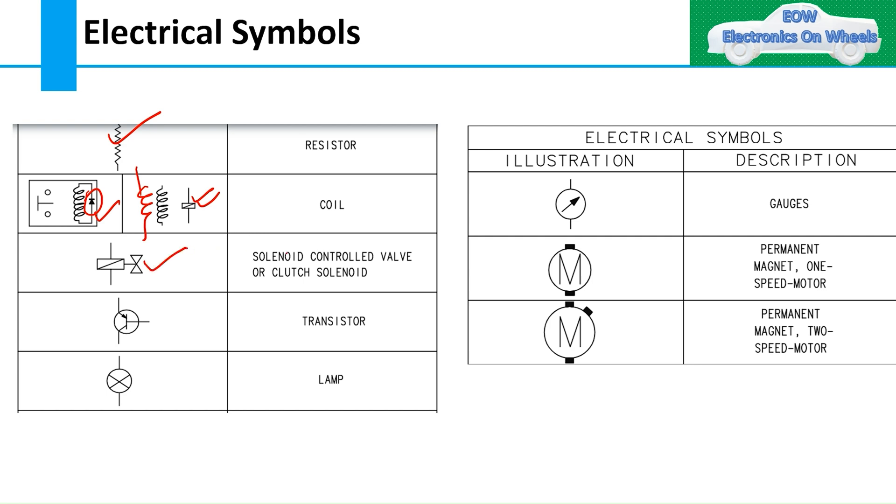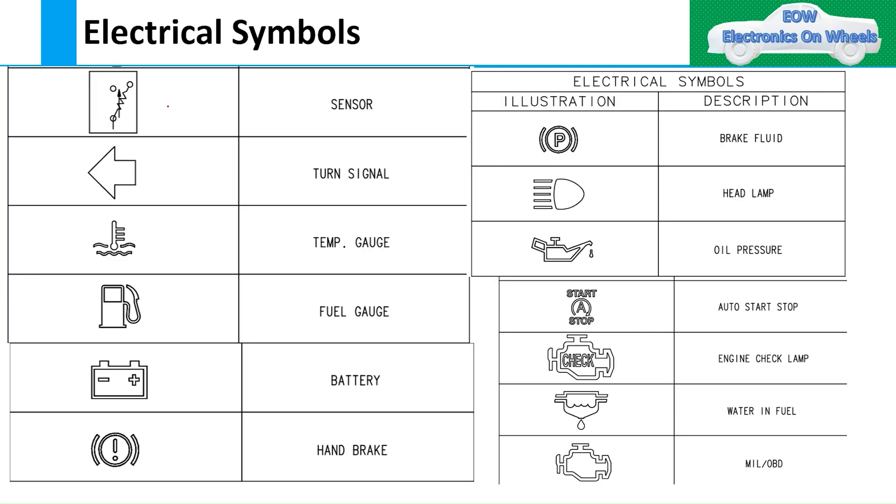Then you have the solenoid controlled valve or clutch solenoid, then transistors. Then we have the lamps - there are different lamps like headlamps or tail lamps. Many other lamps we'll see in detail. Then gauges - temperature gauge, oil gauge, all these things. Then motors - permanent magnet one-speed motors, then permanent magnet two-speed motors. These are the symbols for these.